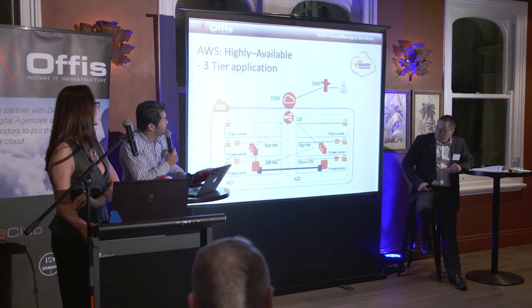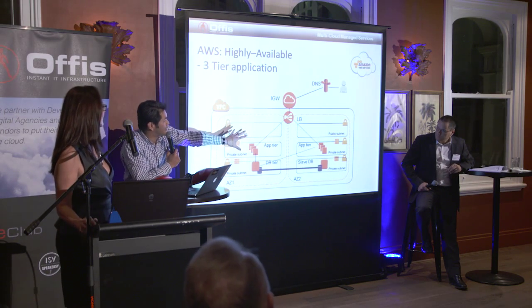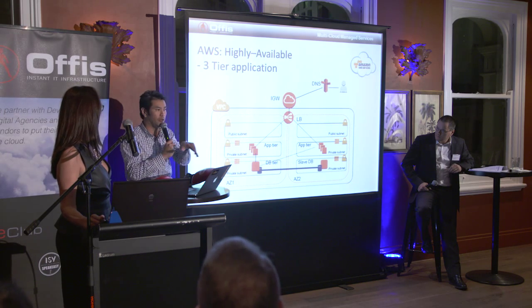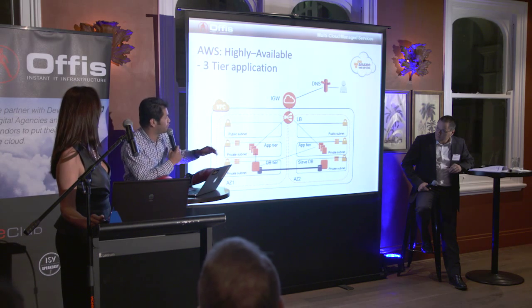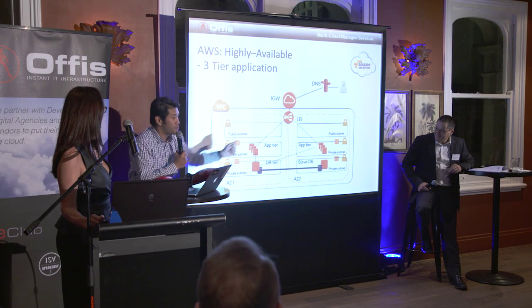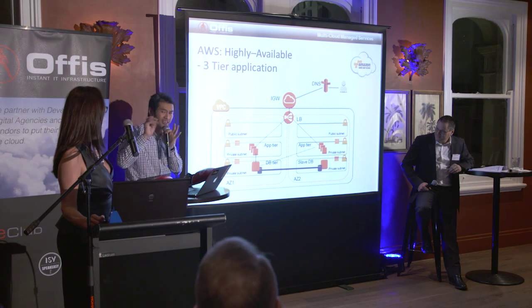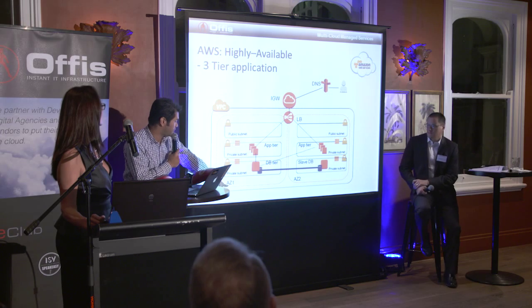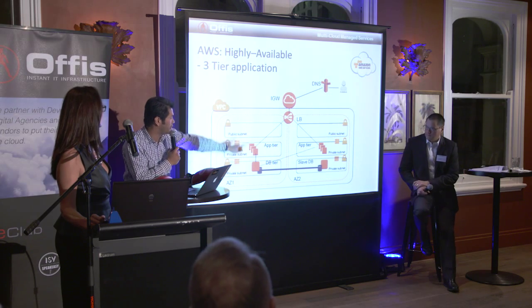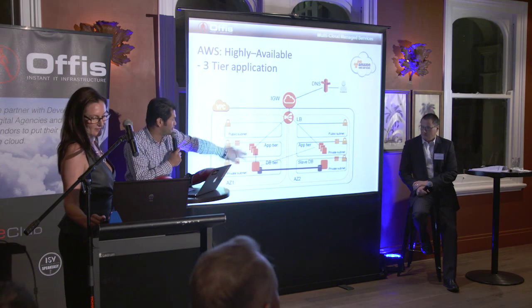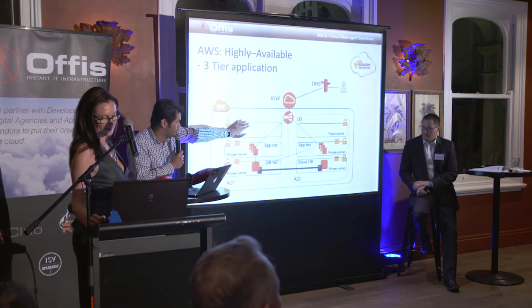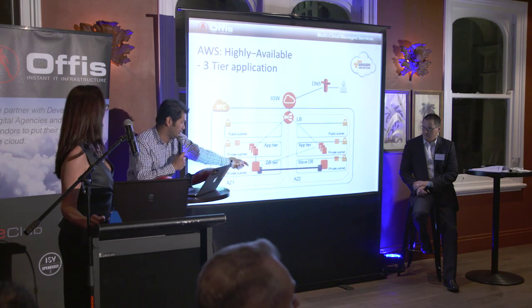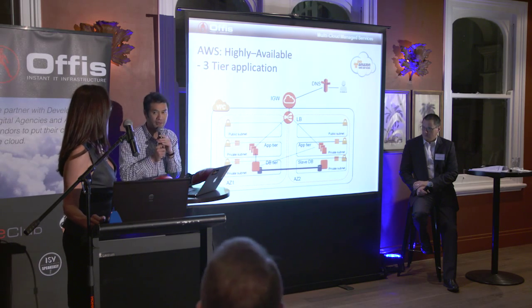You've got your load balancer. When traffic comes in, it goes to the DNS, traverses down, and hits the load balancer. You can set policies to say go to availability zone A all the time. Traverse down to the web server, do what you need to do, then go down to the database and pull information.